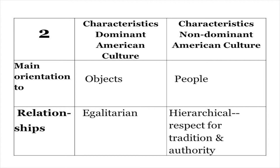The main orientation is very important. For the dominant culture, according to this chart, it's objects. With cultural minorities, it's people. When I visit friends with a lot of money and power, they show me all their trophies, pictures, and stuff they've got. But when I visit my Black and brown friends, they're more interested in sitting down and talking — relationships and people are more important. The dominant culture is egalitarian; everyone seems equal — adults, children. But in the non-dominant culture, it's hierarchical, with respect for tradition and authority.